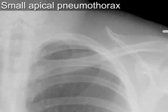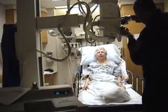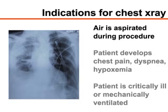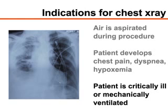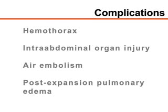Pneumothorax is uncommon after thoracentesis and, when present, it rarely requires the placement of a chest tube. Chest radiographs are not required after simple, uncomplicated procedures. Radiography of the chest should be performed if air was aspirated during the procedure, if chest pain, dyspnea, or hypoxemia develops, or if the patient is critically ill or undergoing mechanical ventilation. Other complications of thoracentesis include pain, coughing, and localized infection. More serious complications include hemothorax, intra-abdominal organ injury, air embolism, and post-expansion pulmonary edema.